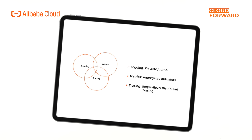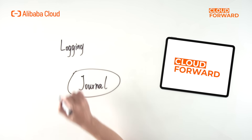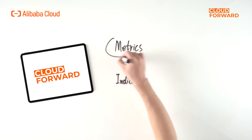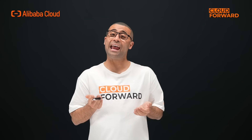Observability includes three aspects: logging, metrics, and tracing. Logging is the journal which records key information about the function's runtime. This information is discrete and specific, and combined with error logs and function code, it can quickly help identify issues. Metrics are indicators which are aggregated data, usually presented in the form of charts to show core indicators such as error rates, and can reflect the running and health status of functions.